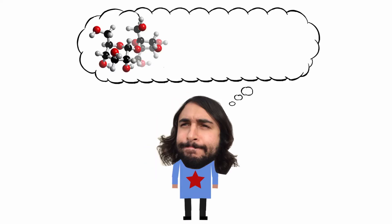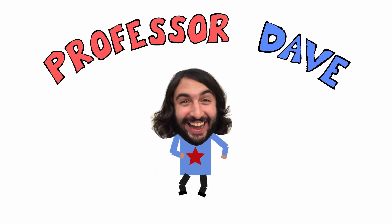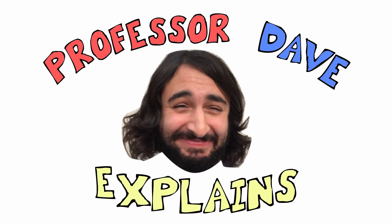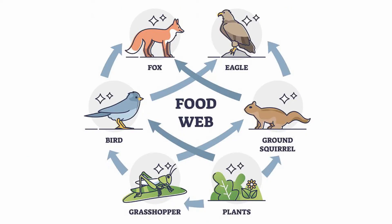Professor Dave Explains. We just learned about energy flow and nutrient cycling, from autotrophs to heterotrophs, as well as detritivores, so now let's look at food webs as a whole.